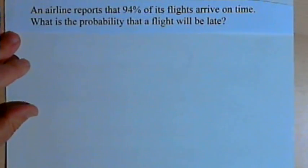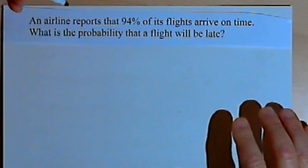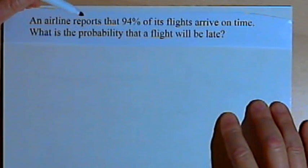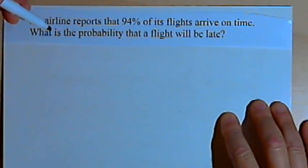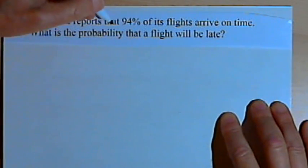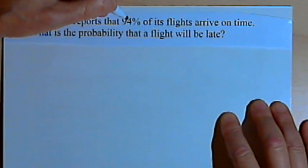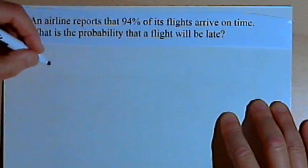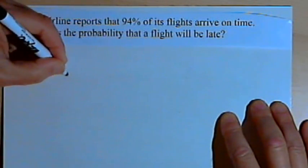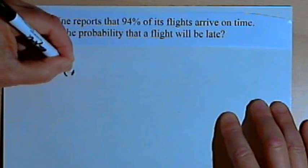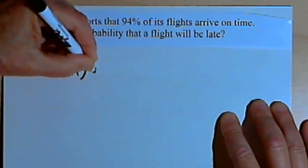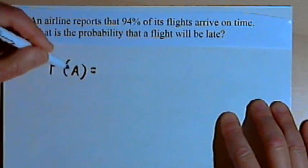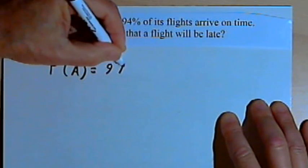Let's start with this example. An airline reports that 94% of its flights arrive on time. What is the probability that a flight will be late? So let's call the event of arriving on time A. The probability of A — the probability that the flight will arrive on time — is 94%.